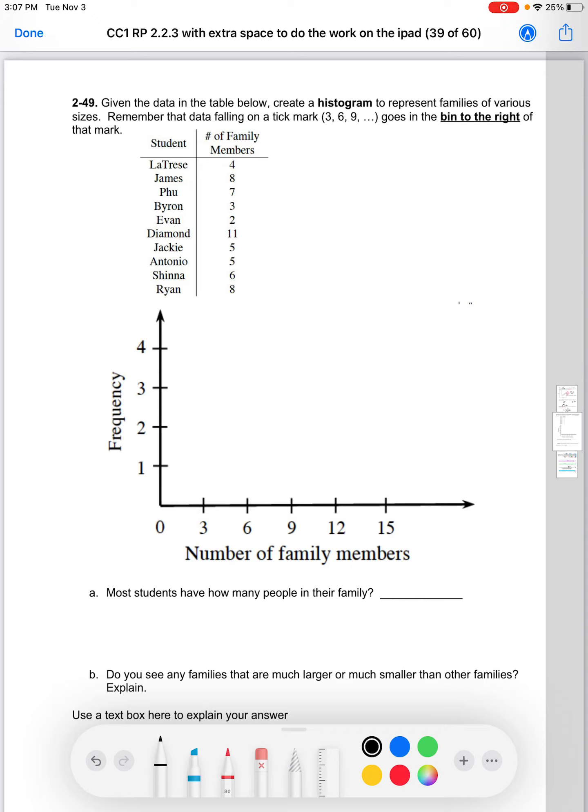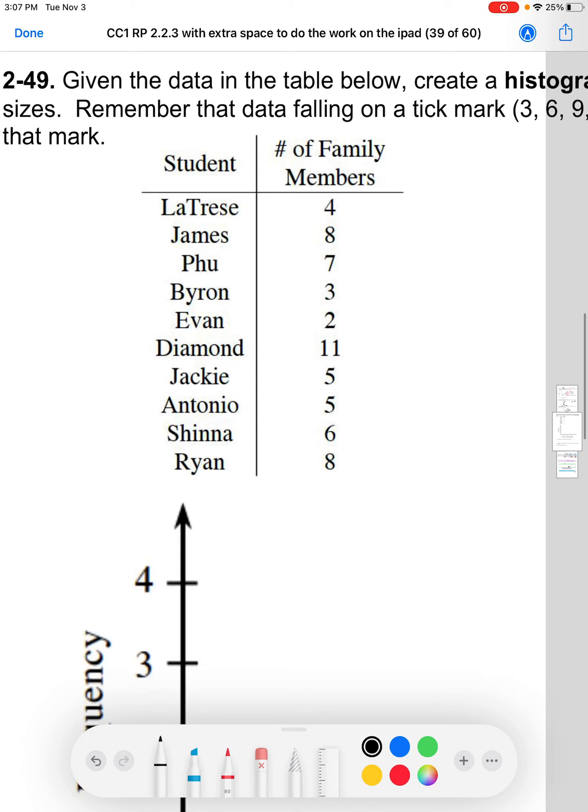So we're given this data in the table below, we need to create that histogram, and it represents families of various sizes. Remember that data falling on tick mark 3, 6, 9 goes into a bin to the right of that mark, right? So let's take a look here.